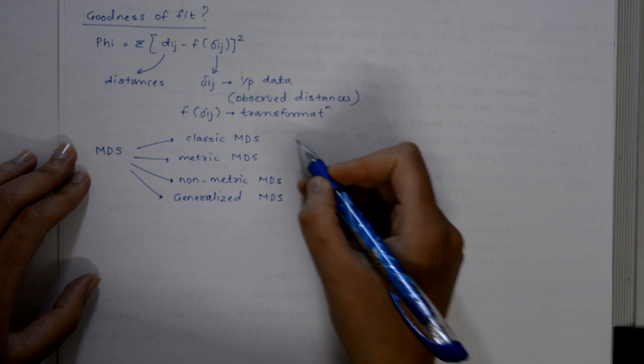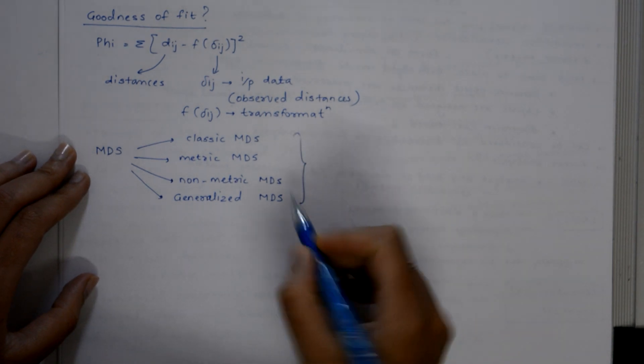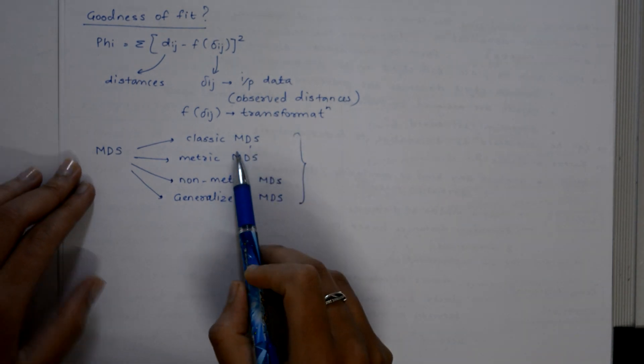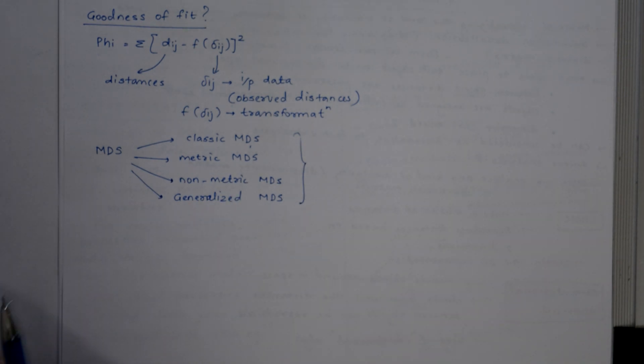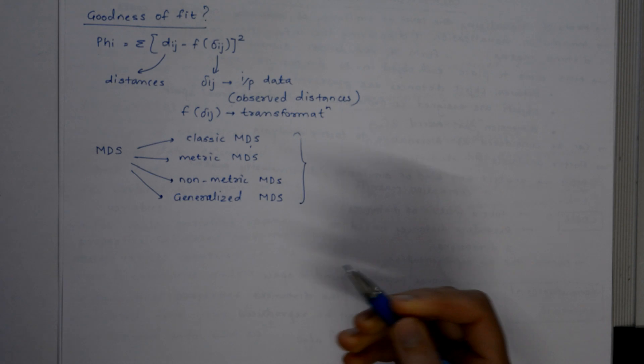Now we have some types of MDS: classic MDS, metric MDS, non-metric MDS, or generalized MDS. What is the application of MDS? We can use MDS to analyze any kind of distance or similarity matrix.